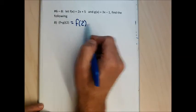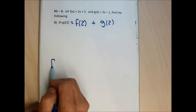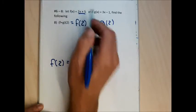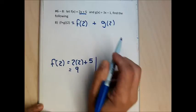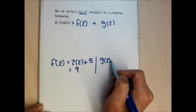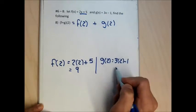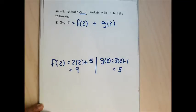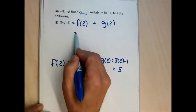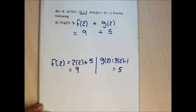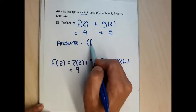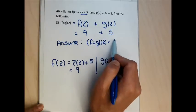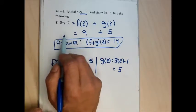Problem 8 wants (f + g)(2). I find f(2) by plugging 2 into f: 2 times 2 plus 5 equals 9. Then I find g(2) by plugging 2 into g: 3 times 2 minus 1 equals 5. So f + g of 2 equals f(2) + g(2) = 9 + 5 = 14. You don't have to write the full work — if this were a test question and you just wrote 14, I can completely live with that.